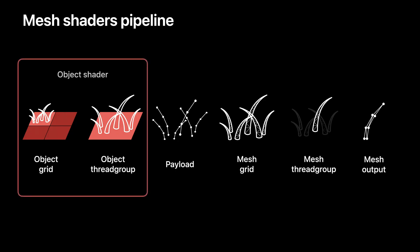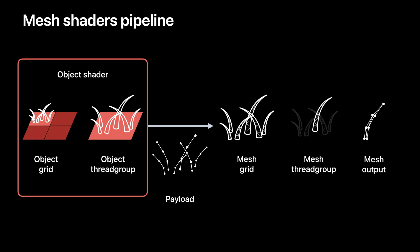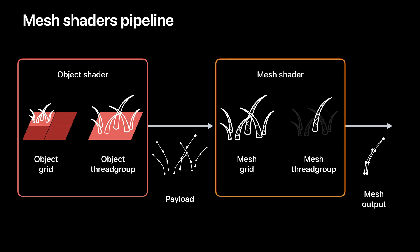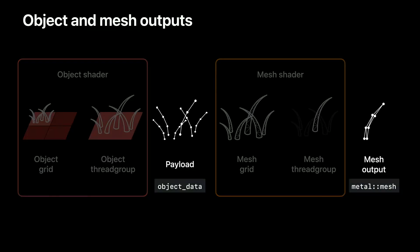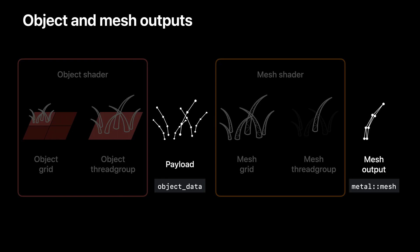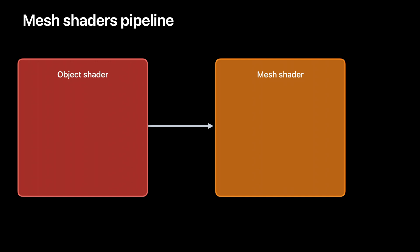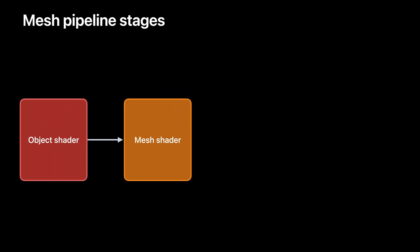In a mesh render pipeline, input geometry is split into tiles for the object shader grid. Each object shader thread group can independently generate a payload and launch a mesh grid. Each mesh shader thread group from the grid generates a metal mesh, which is further processed in the rest of the rendering pipeline. The payload is defined in the object shader, and each object thread group passes the customized payload to the mesh grid it spawns. In the case of hair rendering, the payload consists of the curve control points. The mesh shader outputs vertex and primitive data through a new metal mesh type.